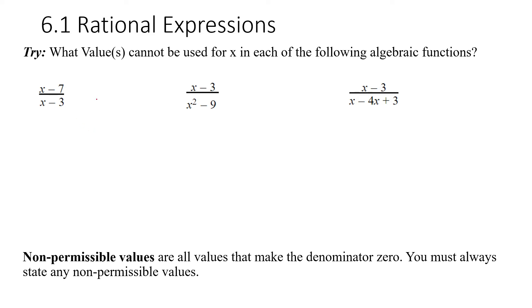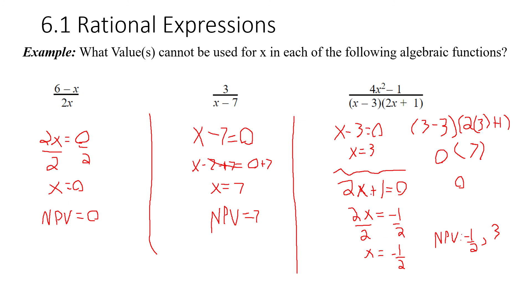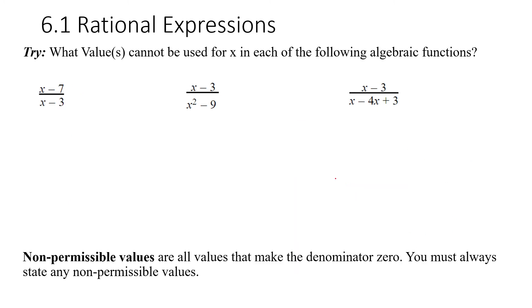Pause it here and try these three problems. Remember: when square rooting you need to take the plus-minus, and for the trinomial you'll need to factor it into two binomials and then find the two non-permissible values, just like we did here.